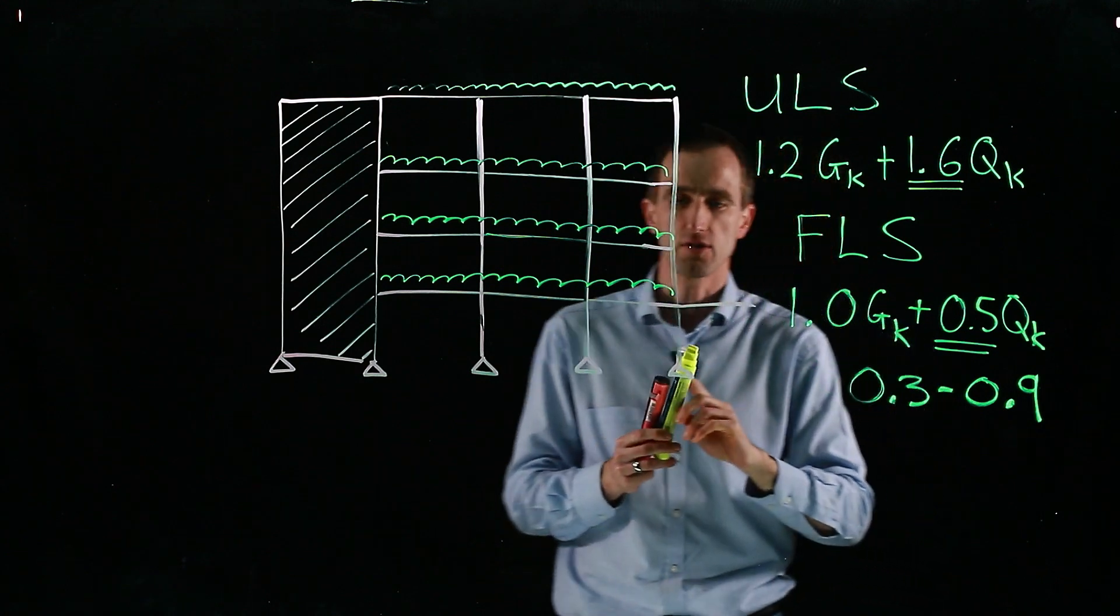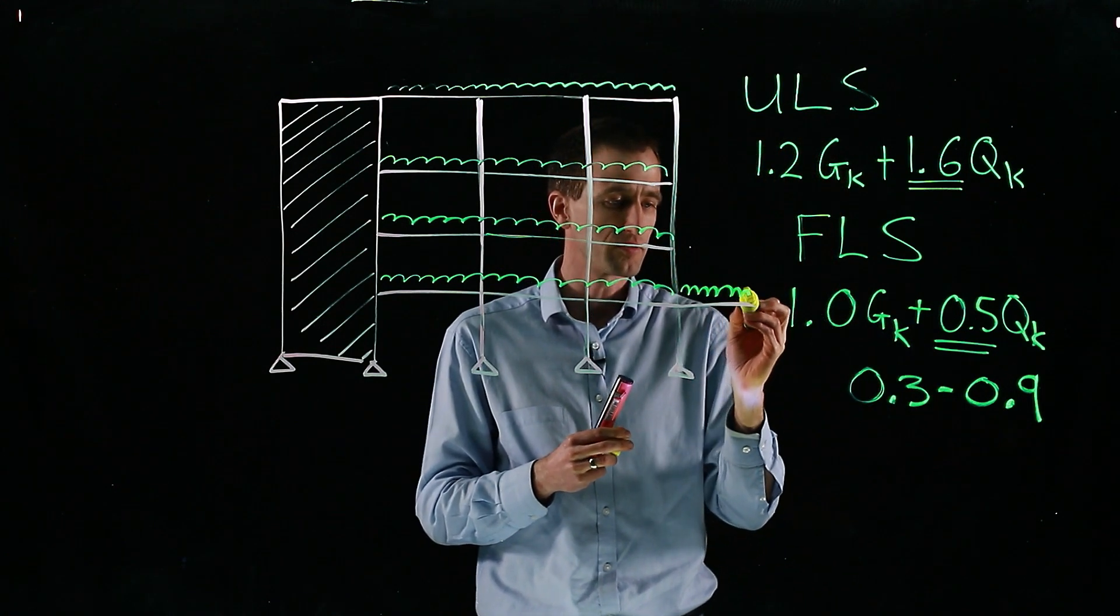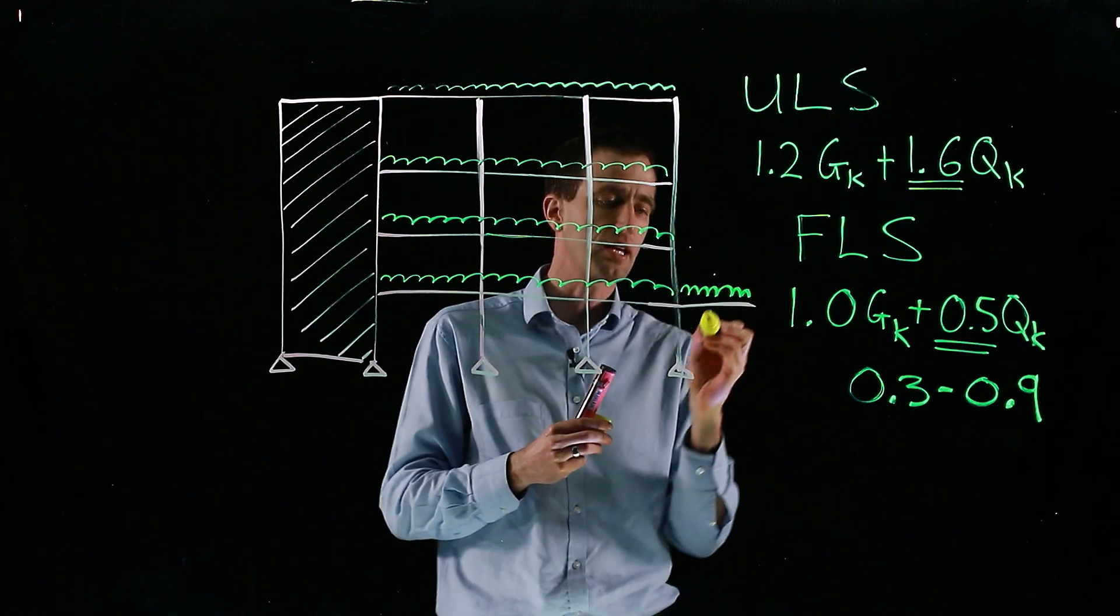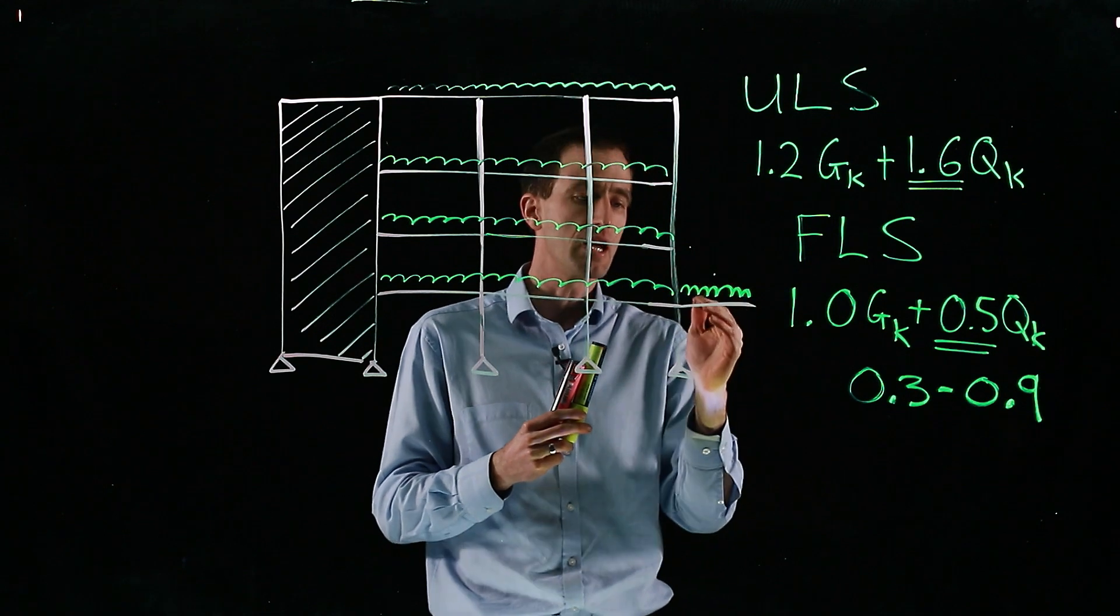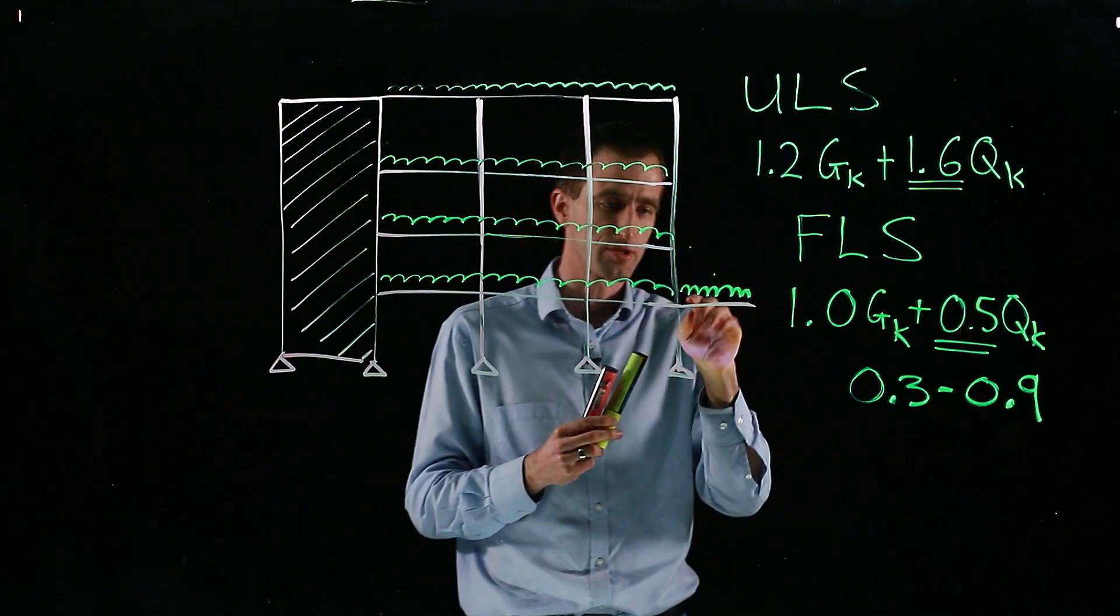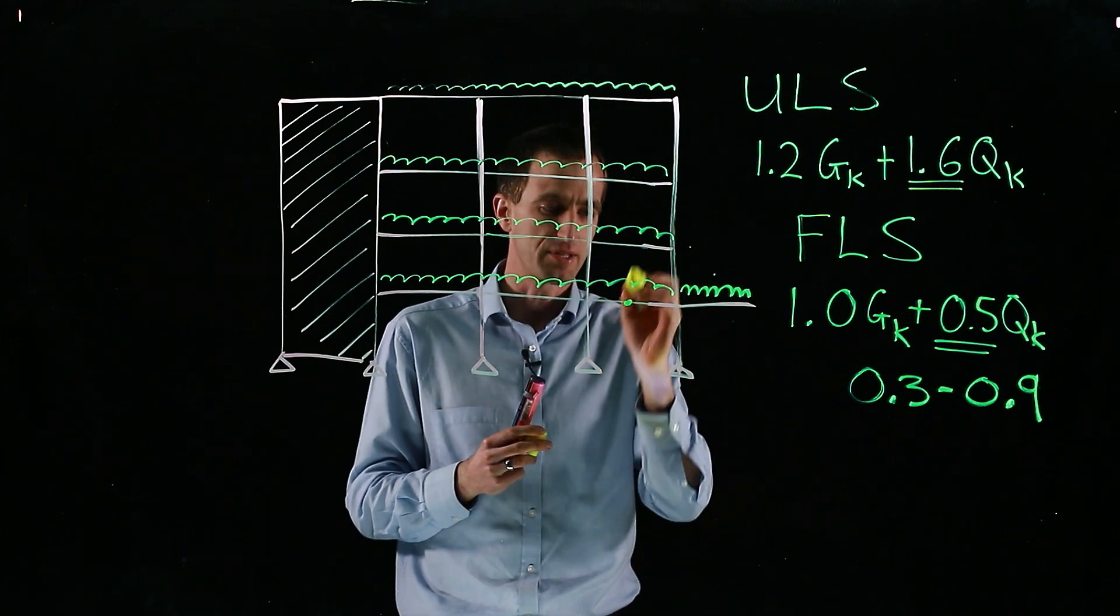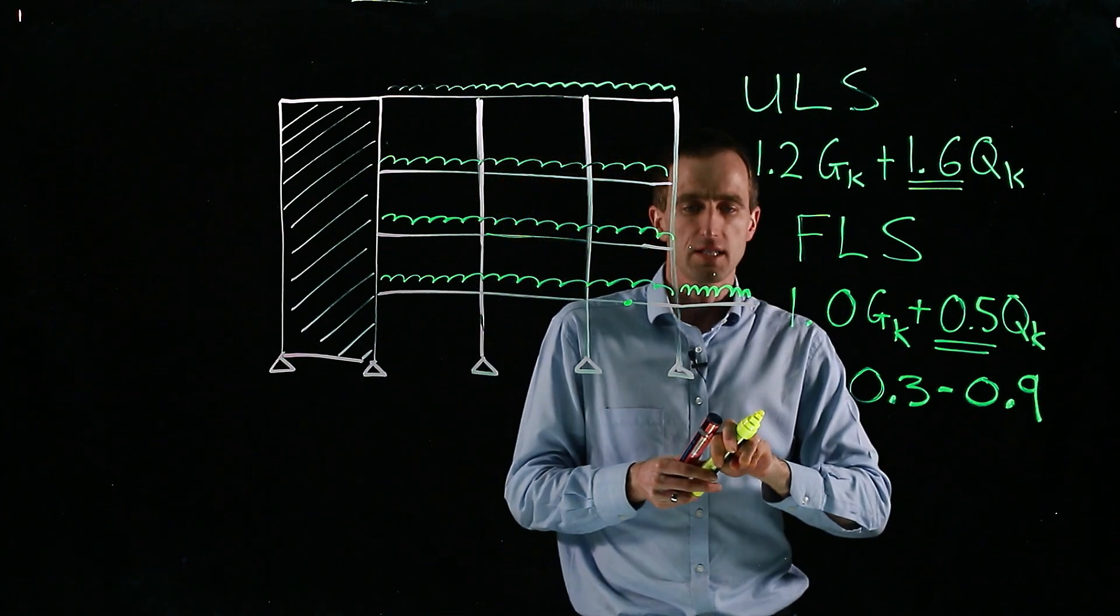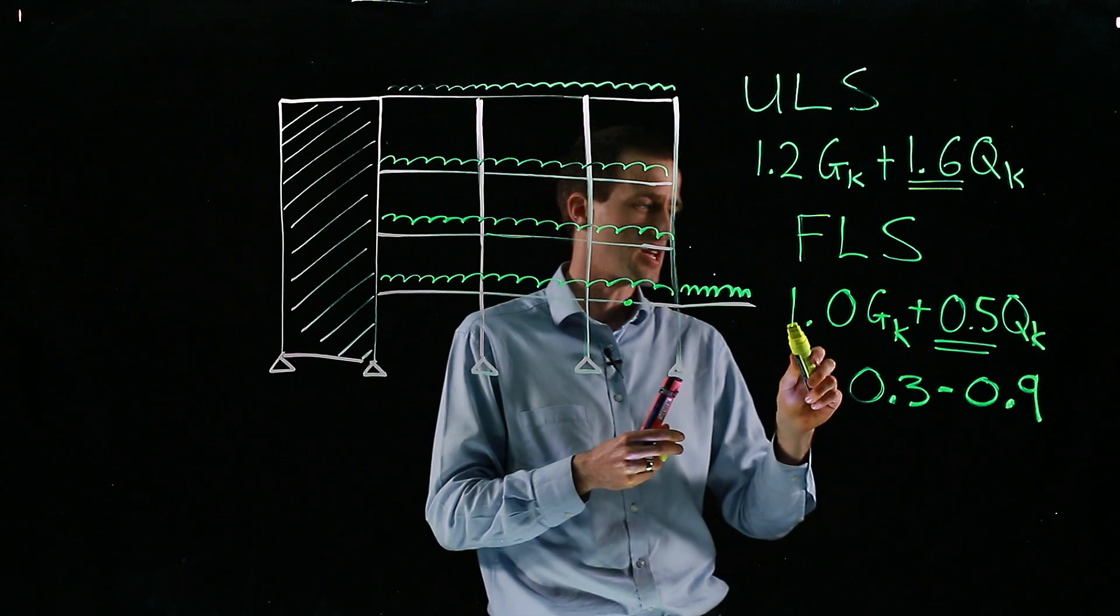And then one other thing you may need to consider is you also have favorable and unfavorable. For instance, we've got a balcony on our building. When the balcony is loaded, it may increase load in some parts and decrease loads in others. Because as this bends down, it'll lift the floor up, actually decreasing bending moments in certain parts. So depending on whether it's unfavorable or favorable, we may have different factors of safety.